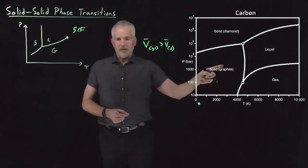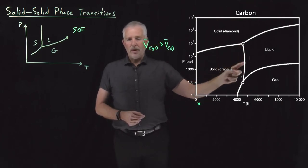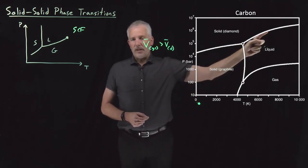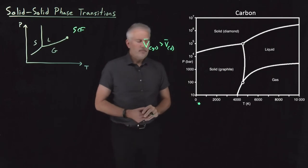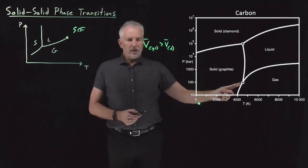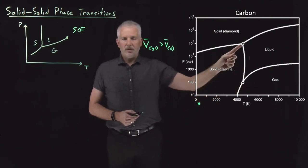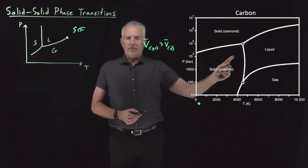We can melt either the solid graphite phase or the diamond phase because there's coexistence curves separating graphite and liquid and separating diamond and liquid. I guess it's worth pointing out also that we have not only this traditional triple point between the solid, liquid, and gas phases, but there's a triple point up here as well between the diamond, graphite, and liquid phases.